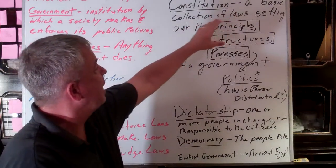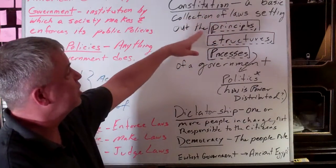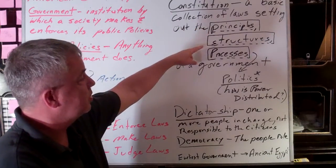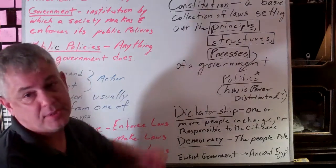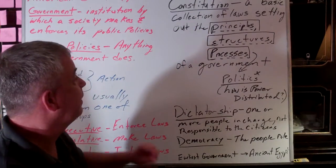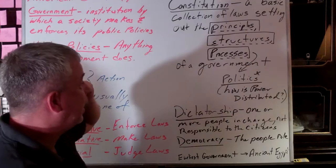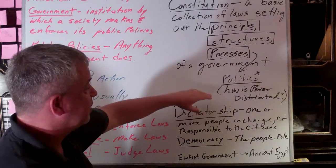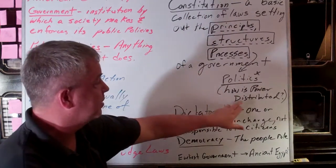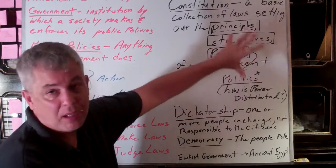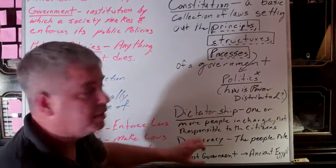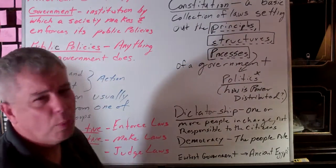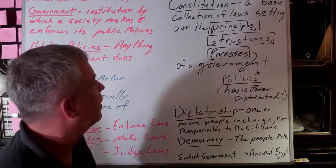We call it a basic collection of laws setting out the principles, structures, and processes, and what the government does. How this actually operates and how politics is distributed is what's called politics, which we'll talk more about in class.